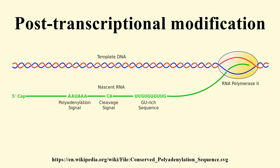Poly-A polymerase then adds about 200 adenine units to the new 3' end of the RNA molecule using ATP as a precursor. As the poly-A tail is synthesized, it binds multiple copies of poly-A binding protein, which protects the 3' end from ribonuclease digestion.